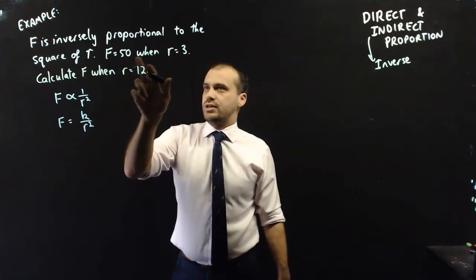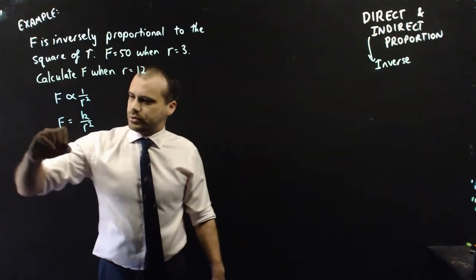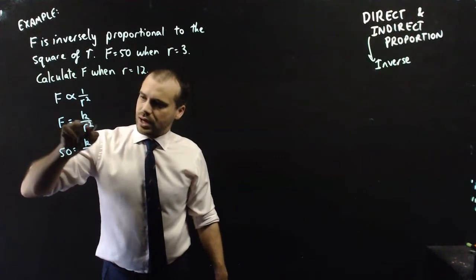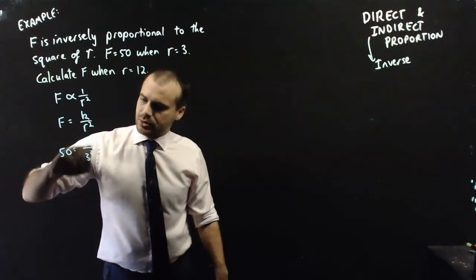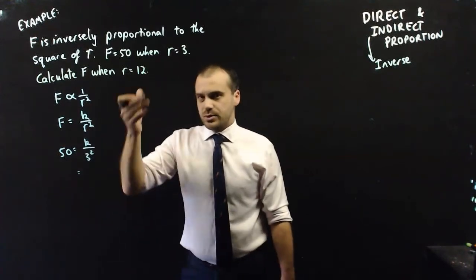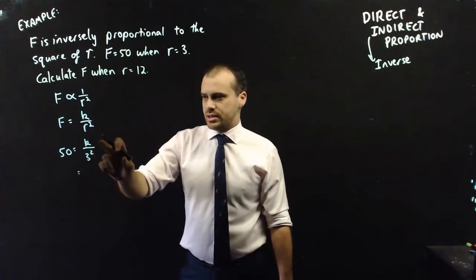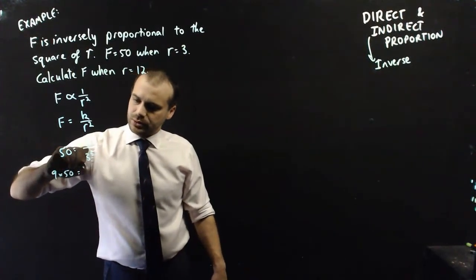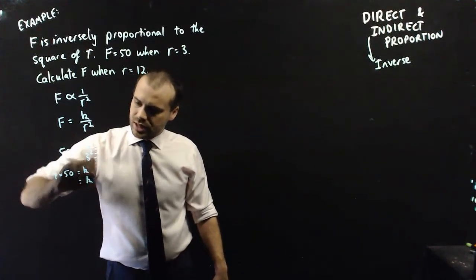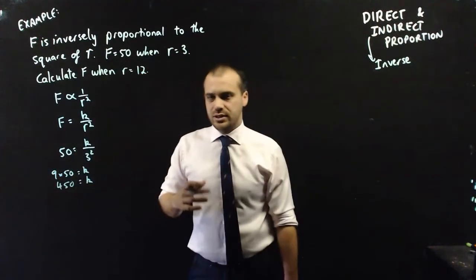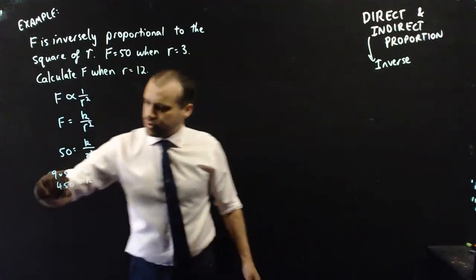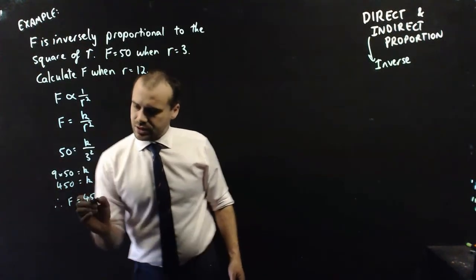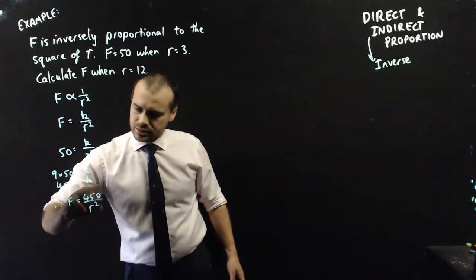f equals 50 when r equals 3. All right, f equals 50, k, when r equals 3, 3 squared. All right, so 3 squared is 9. We want to know what k is, so we need to do 9 times 50. 9 times 50 will equal k. So, k equals 450. Therefore, we know that f equals 450 divided by r squared.